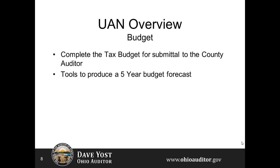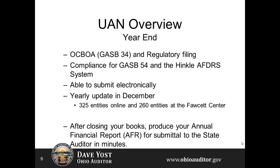UAN provides budget software to not only prepare reports such as the tax budget and assist in preparing the county certificate of estimated resources, but also powerful budgeting worksheet tools to produce reports such as a five-year budget forecast or a comparison of your current budget with up to four prior years. After closing your books for the year-end process, you can produce your annual financial report — also known as the AFR — for submittal to the state auditor in minutes, in whatever format ensures compliance.